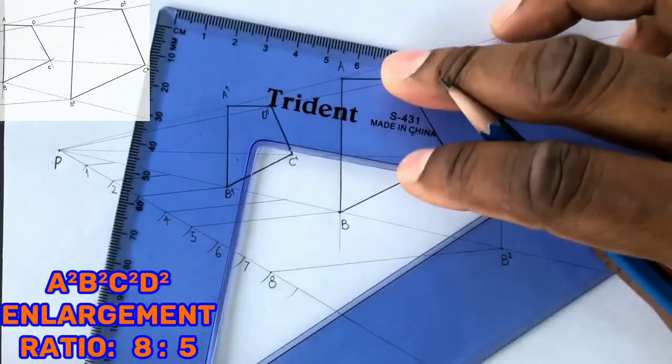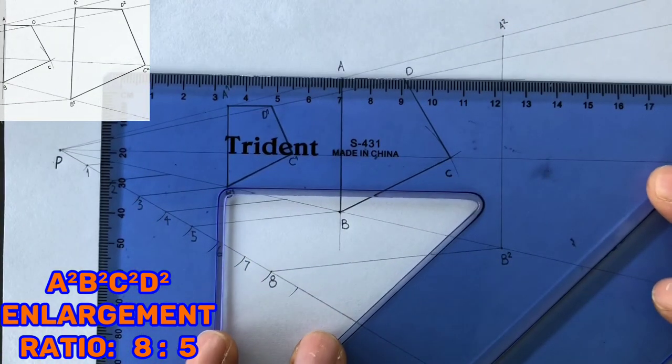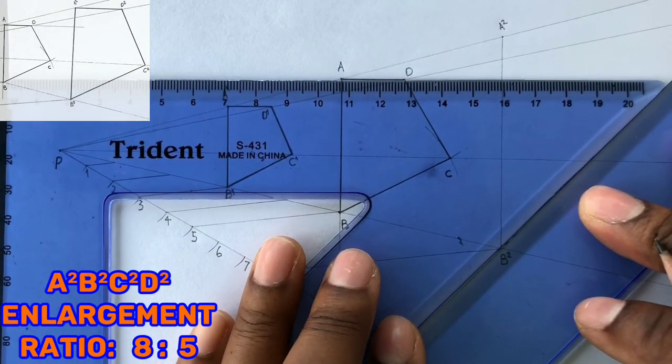From A2, you will draw a parallel line that is parallel to line AD. Again, use your two set squares to do so.